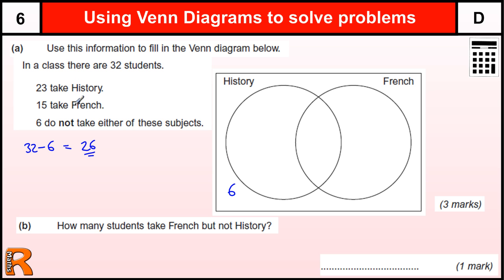So we've got 23 History, 15 take French. So that's 23 plus 15 is 38 students in total. But there's only 26 that can be in these two circles. So what we have there is the classic thing which is the overlap, the bit in the middle.